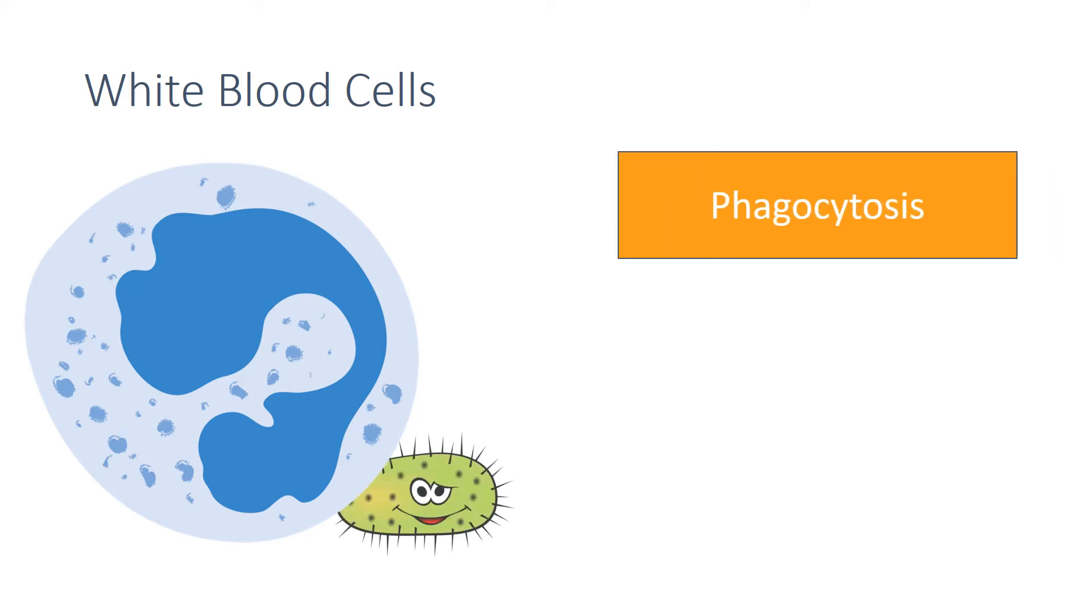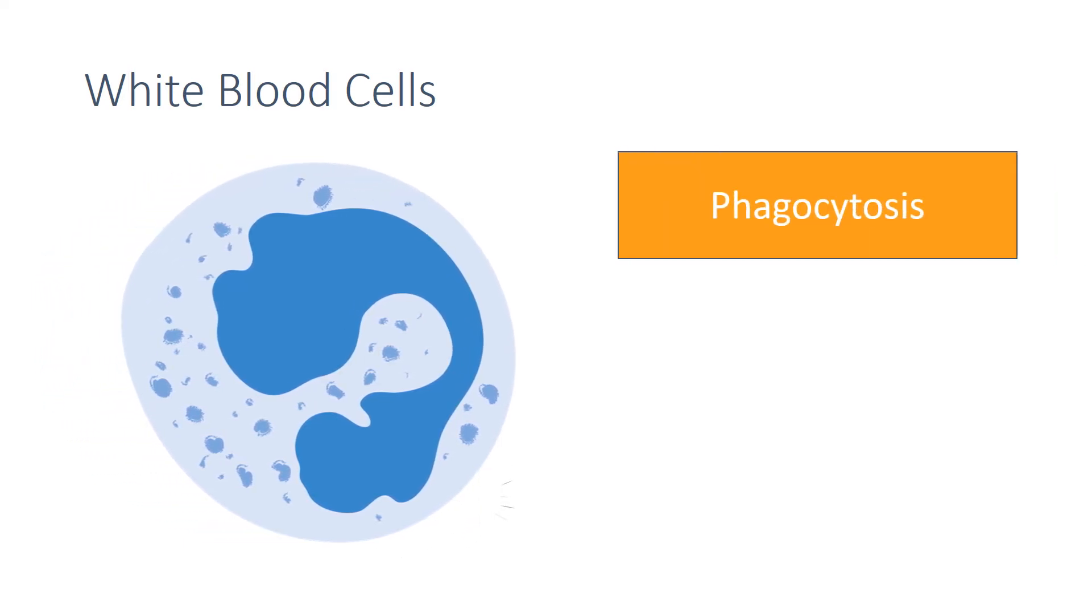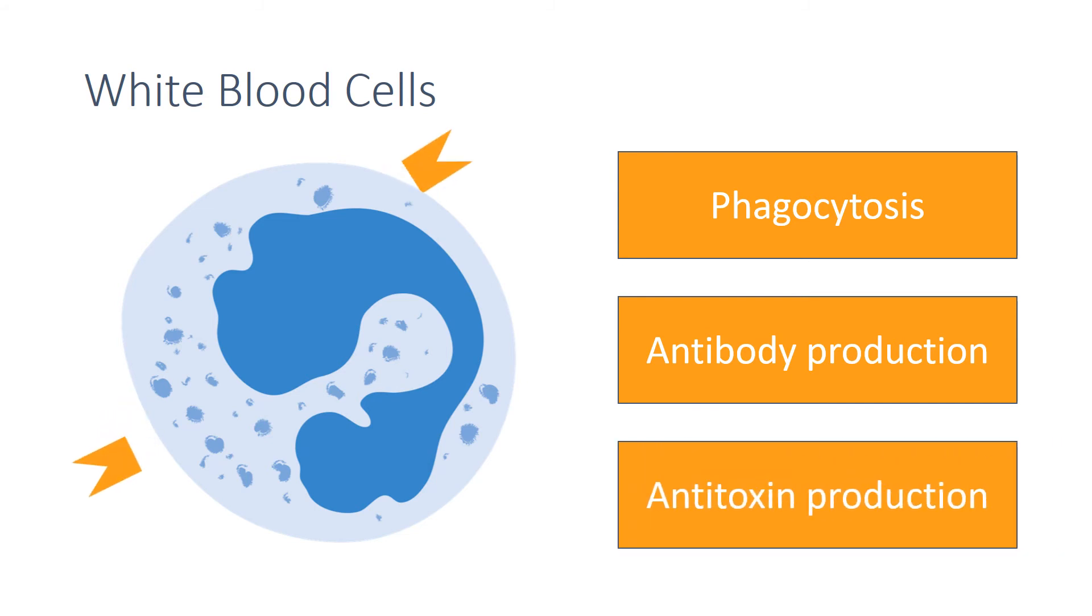by phagocytosis where they engulf and digest invading pathogens, by producing antibodies which target and destroy particular bacteria or viruses, and by producing anti-toxins which cancel out the toxins that are released by pathogens.